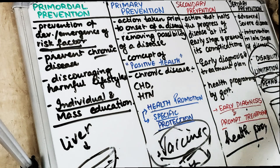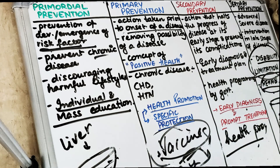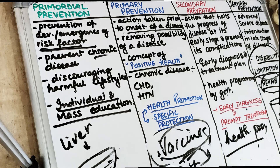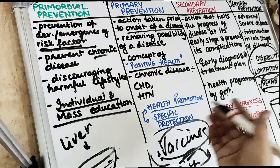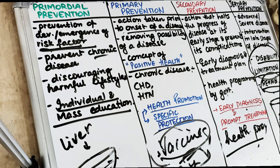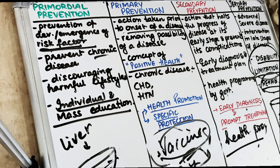This is the tertiary level of prevention — disability limitation or rehabilitation. In dentistry, the tertiary level of prevention includes implants, root canal treatment, periodontal surgery, minor tooth movement, RPDs, FPDs, and even extraction — since extraction is the extreme level of advancement where you have to remove the diseased tooth.